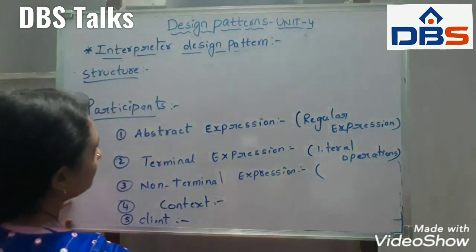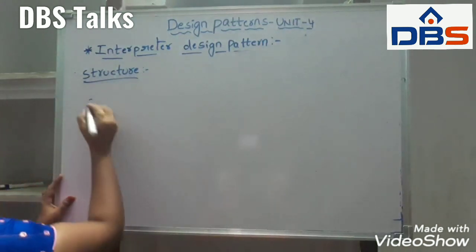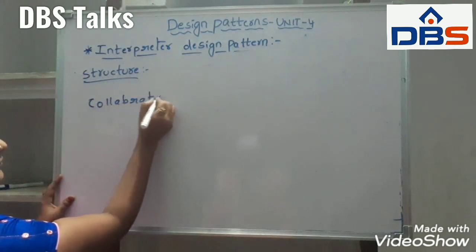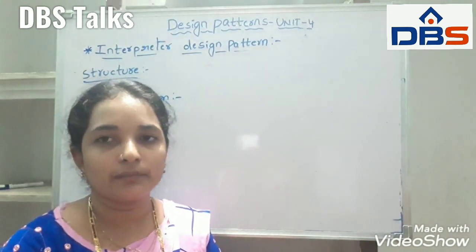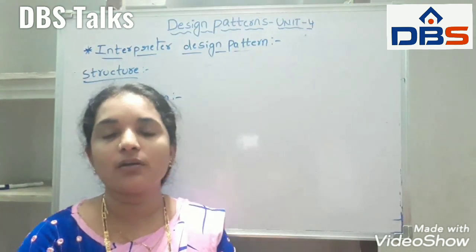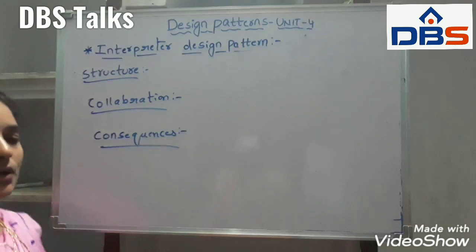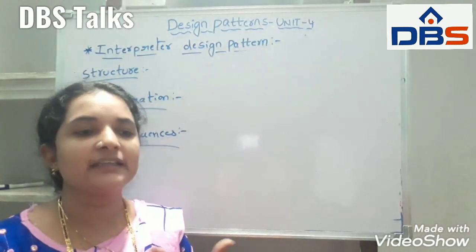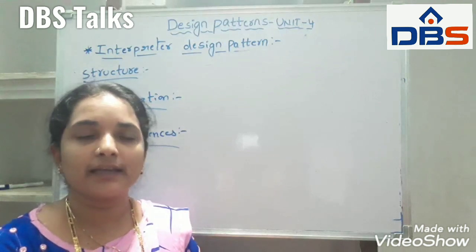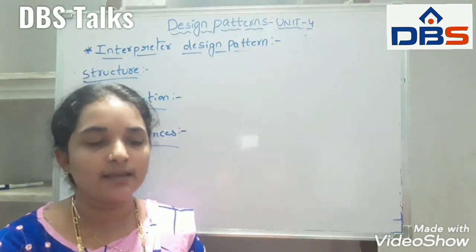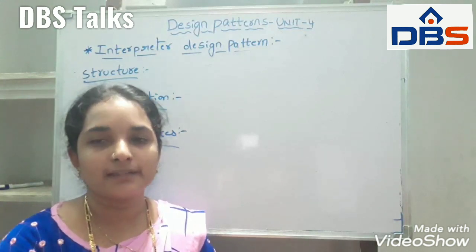Collaboration is nothing but it tells the relationship between the terminal and non-terminal expressions — that is called the collaboration. Next, coming to the consequences: in this interpreter design pattern, it is easy to change and extend the grammar. We can easily change and extend the grammar, implementing the grammar is too easy, and complex grammar is very hard to maintain. These are the consequences we are having in the interpreter design pattern. Thank you.